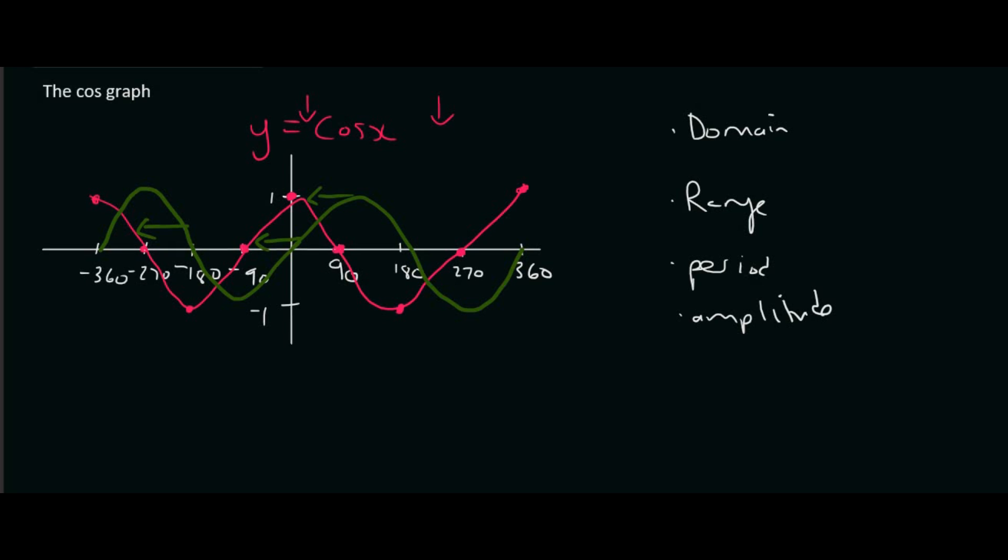The domain, well that's the x values and you just look at what they've given you. So they've drawn it from minus 360 up to 360. So you could say x is an element going from minus 360 up to positive 360 like that.